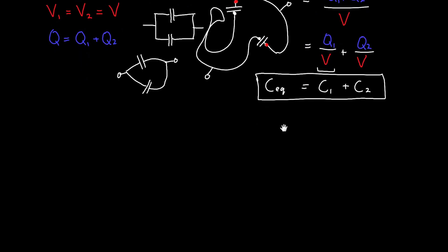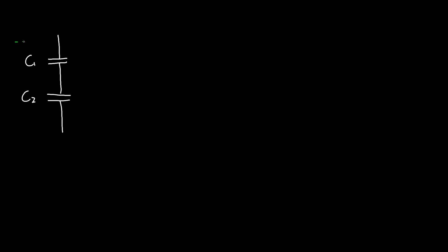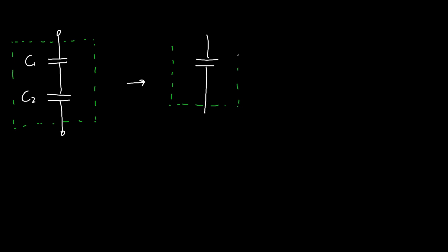That was capacitors in parallel. What about capacitors in series? We can do the exact same trick. Let's say we have two capacitors C1 and C2, and we wrap them in a box. We're going to try to figure out whether we can create a single equivalent capacitor that behaves exactly like the combination of two capacitors. We're trying to find the equivalent capacitance.